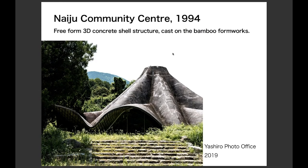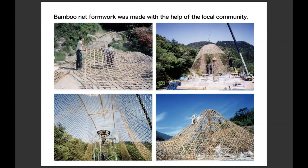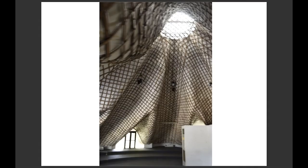In the mid-1990s, Yo continued to design buildings using computers. The Naizu Community Center represents Yo's most radical architectural exploration. The shape of the roof was decided through form-finding with origami, and advanced computer analysis realized the complex geometry. For the construction of this three-dimensional concrete shell structure, Yo decided to use bamboo net as formwork, which was hand-woven and built with the help of the local community. The building is located on a mountainside in Fukuoka. Unfortunately, it is currently vacant and abandoned, and through the activities of the Shohei Yo archive, I hope to restore and conserve this unique and fascinating architecture.